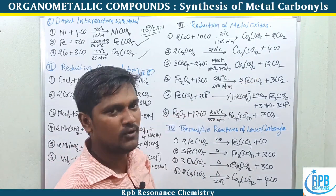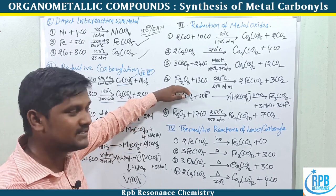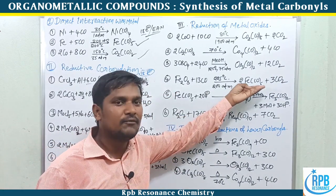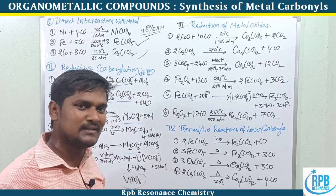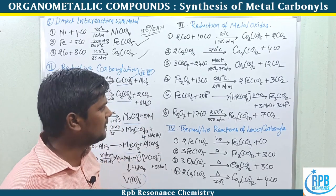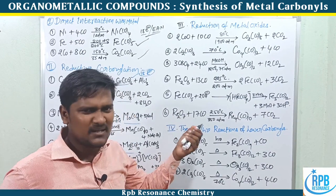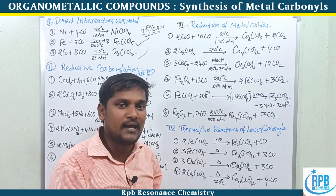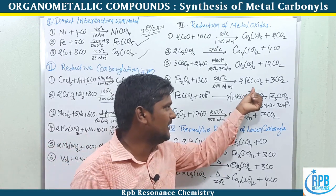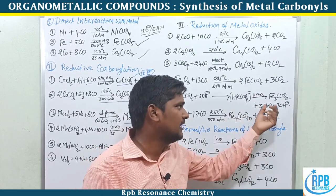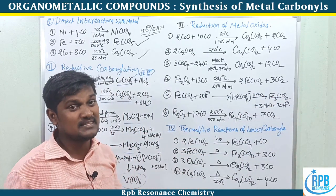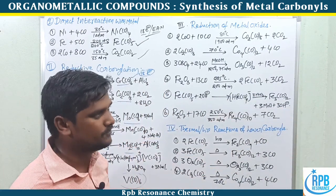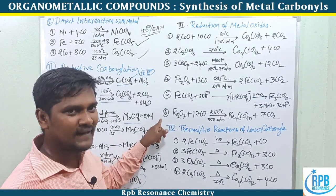Fe2O3 treated with 13 moles of carbon monoxide produces two equivalents of iron pentacarbonyl, Fe(CO)5, plus 12 moles of CO2. Iron pentacarbonyl treated with a small base such as NaOH or KOH produces metal hydride carbonyls in anionic form. This intermediate treated with MnO2 produces the trimerization form Fe3(CO)12, with MnO2 being converted to manganese oxide.